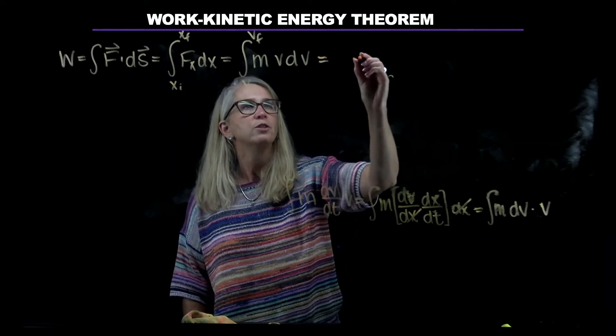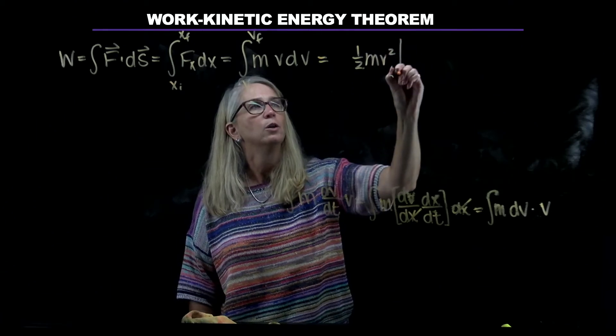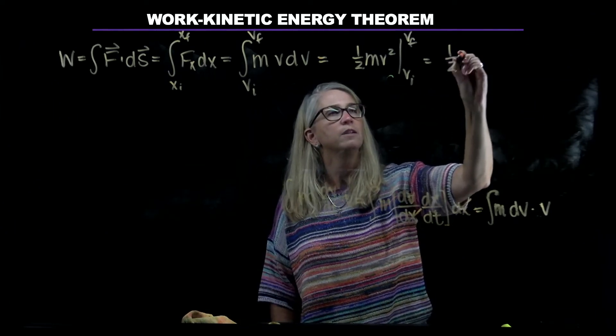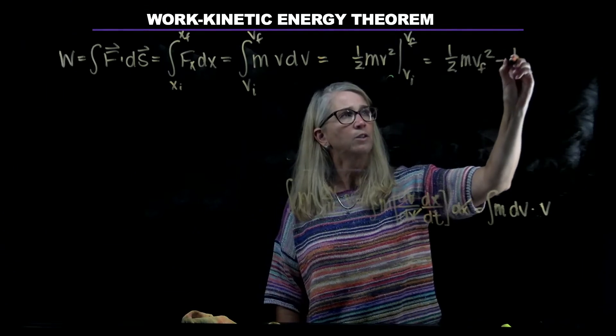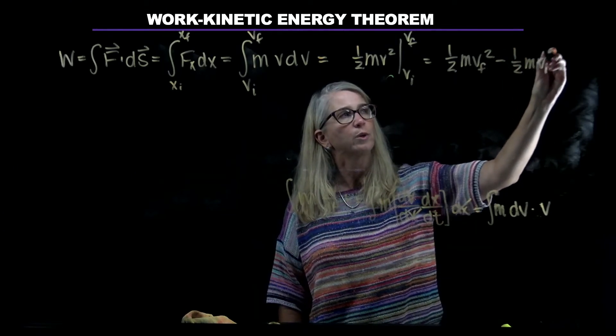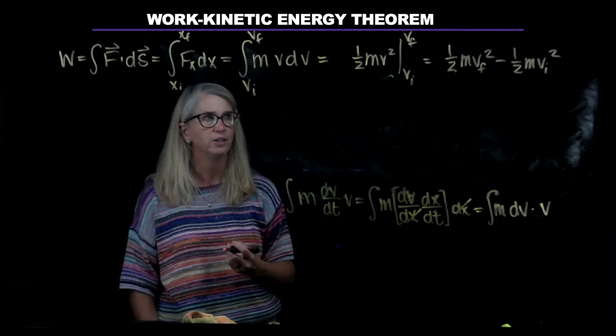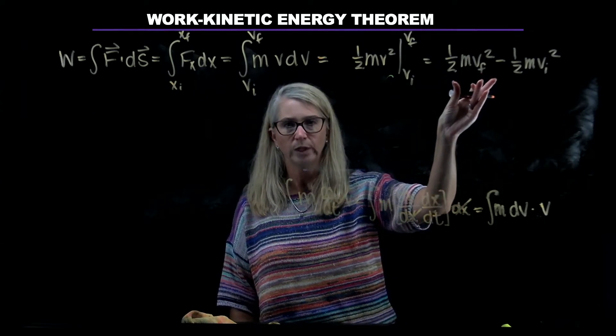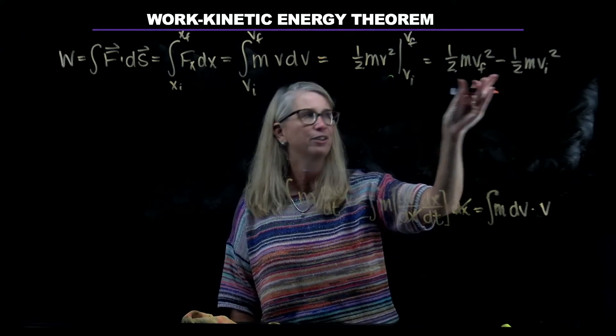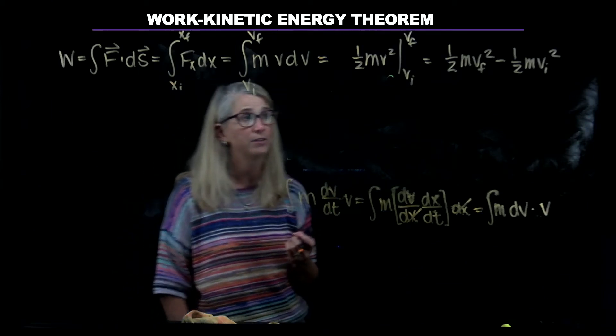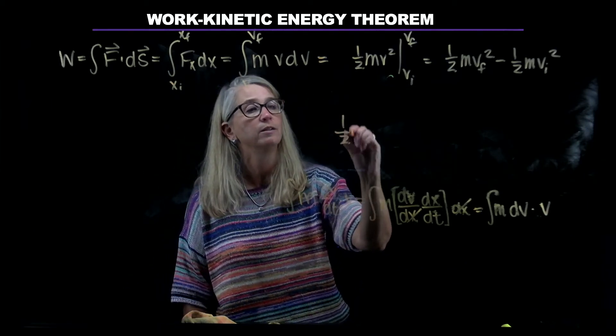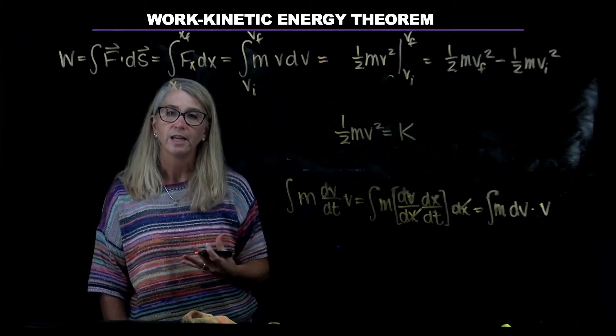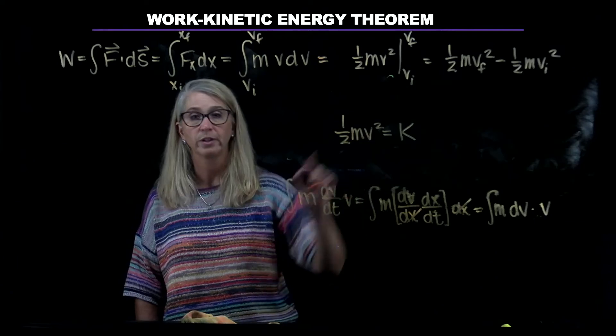If we integrate this, we get one-half m v squared, evaluated from v initial to v final, which equals one-half m v final squared minus one-half m v initial squared. We found that the work is equal to the change in this quantity, one-half m v squared - how much it had at the end versus the beginning. It turns out this term, one-half m v squared, is called the kinetic energy. It's the energy an object has because it's moving.